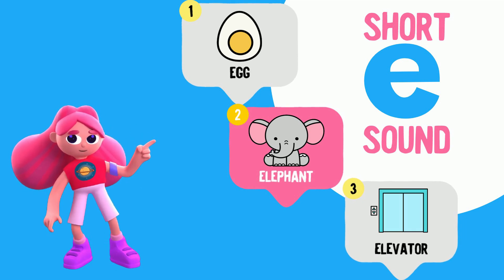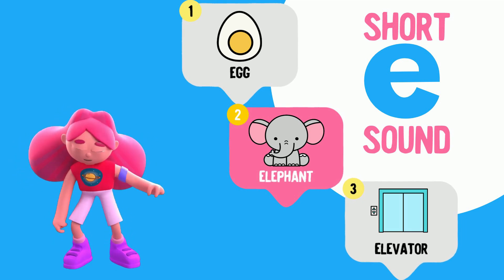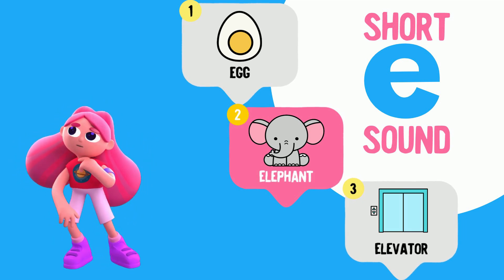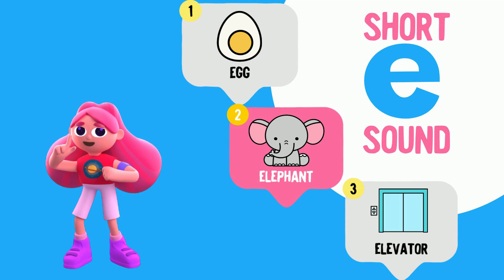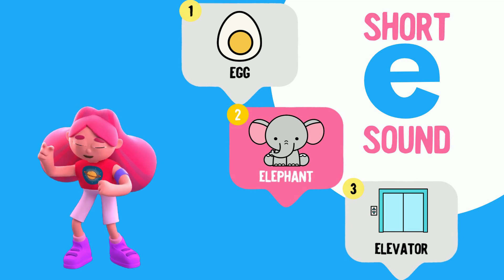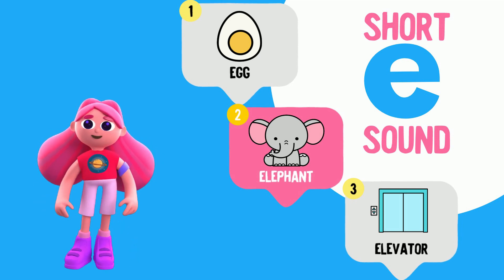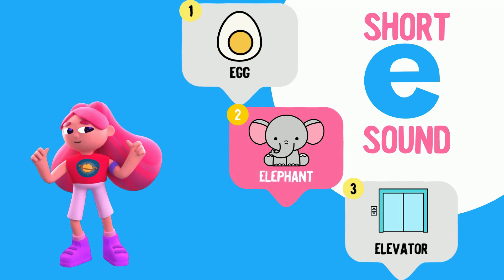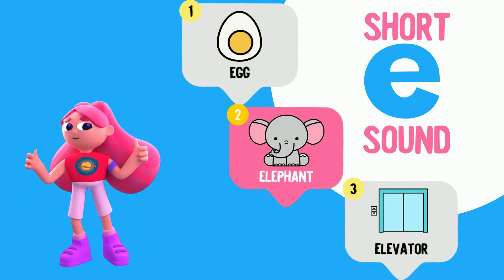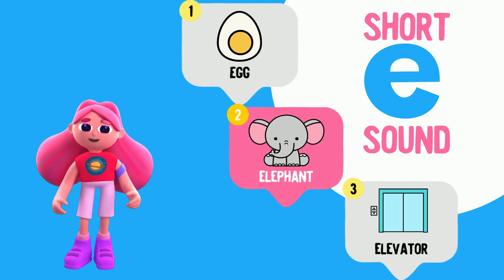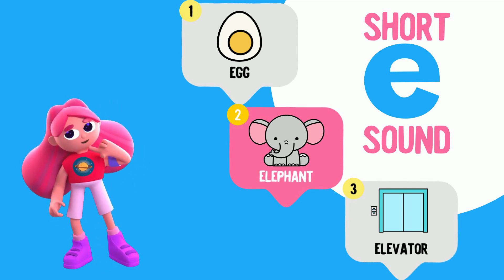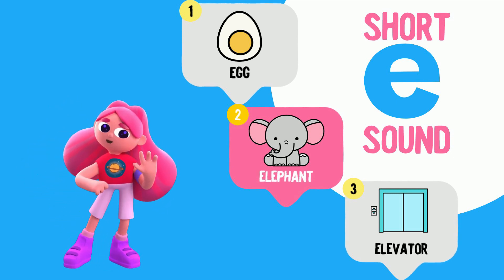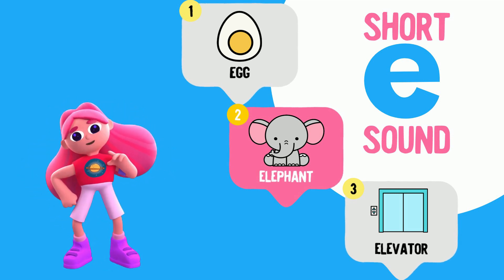Let's say those words together: egg, elephant, elevator. Great job! The short E sound is really important because all the words we'll be building today have the short E sound in them.